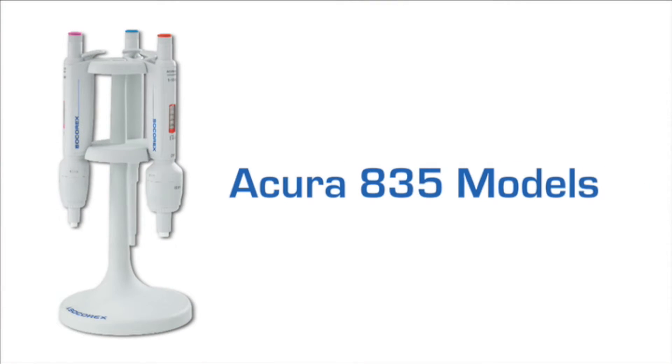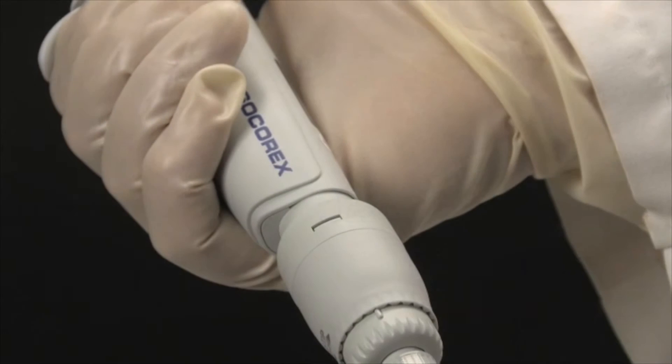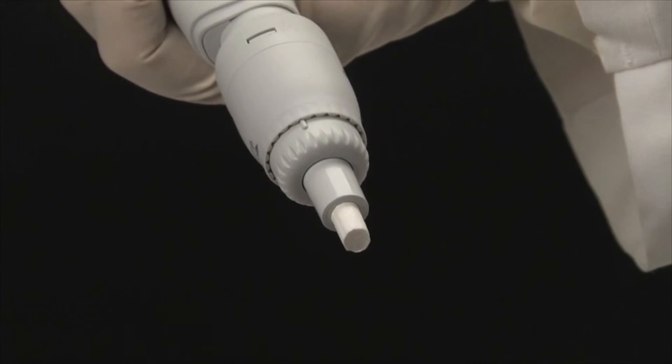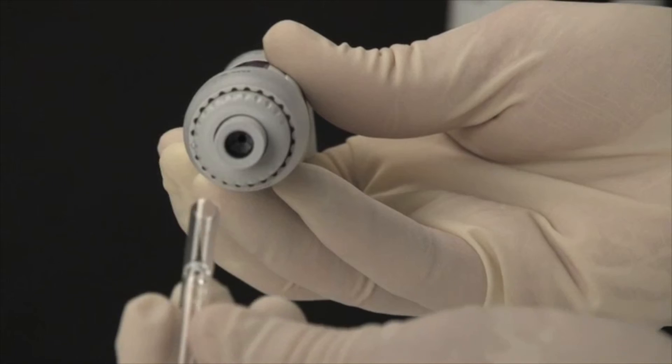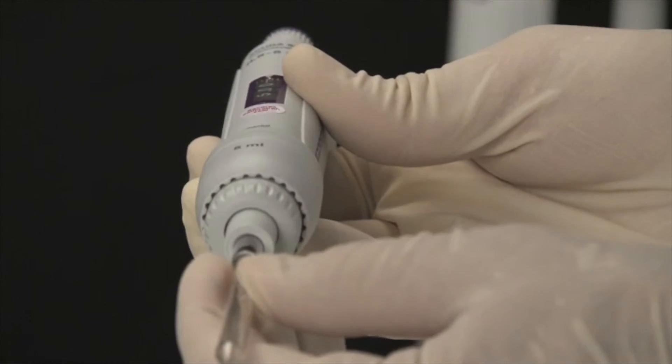The Acura manual 835, which is offered in three sizes for larger samples, can accommodate nozzle filters for added protection against liquid fill and contamination. An optional adapter nozzle allows for the use of Pasteur pipettes on the 2 and 5 milliliter models.